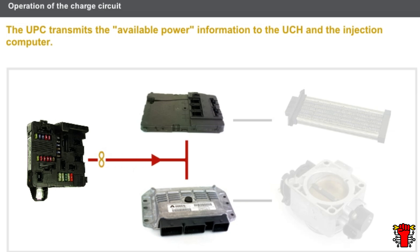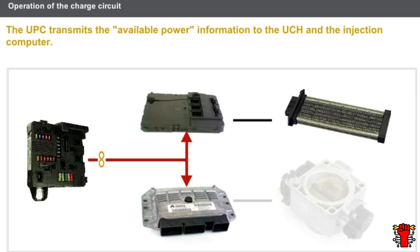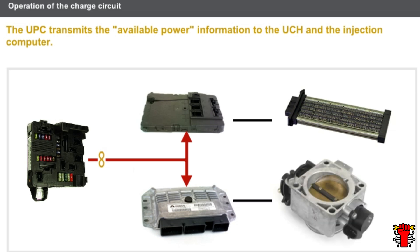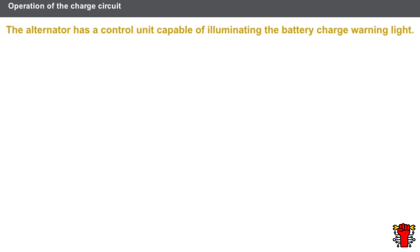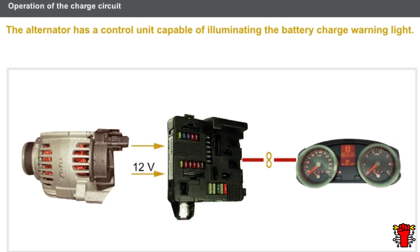The UPC transmits the available power information over the multiplex network to the following components: the UCH for heating resistor management, and the injection computer for idling speed management. The alternator has a control unit capable of illuminating the battery charge warning light. In the event of a problem, the alternator earths a 12-volt after-ignition potential provided by the UPC. The UPC then activates illumination of the battery charge warning light on the instrument panel via the multiplexed network.